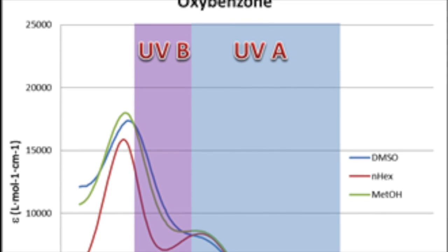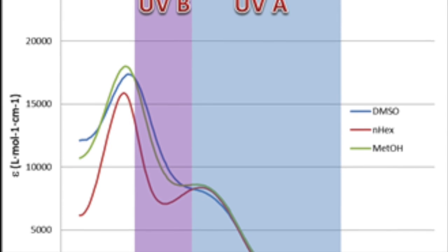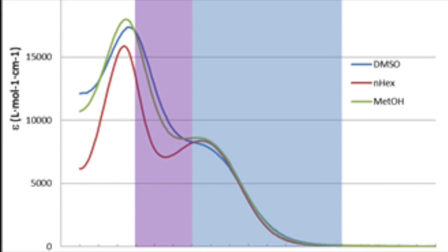The absorption is in both the UVA and UVB region, which is the reason why oxybenzone is such a good sunscreen.